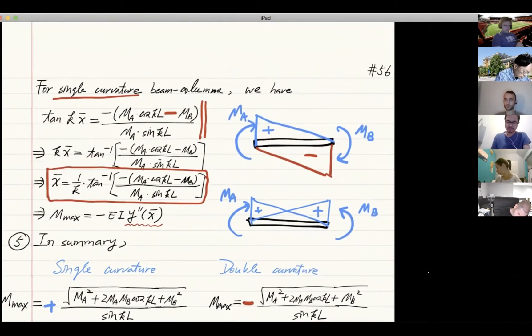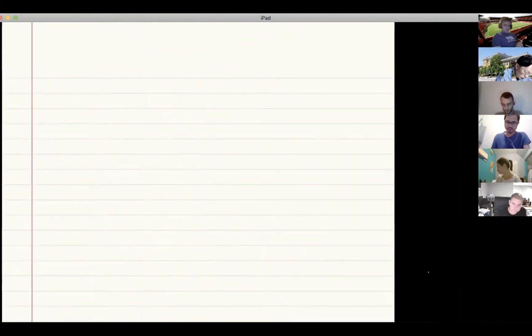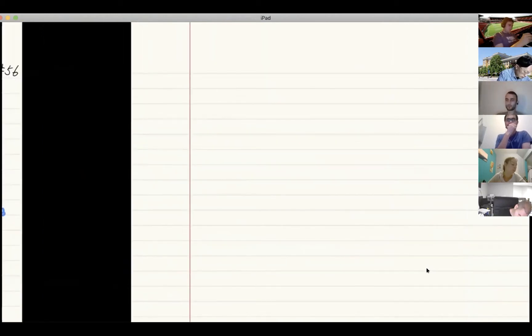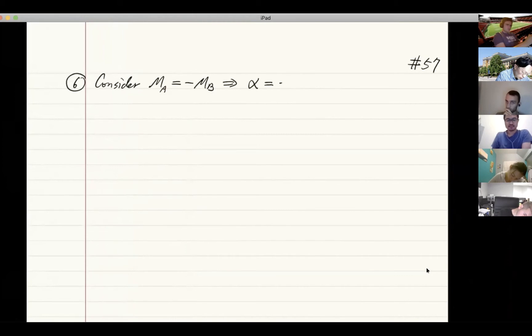Now we're going to connect this to something we use in design. This is step six, similar to what we did with the buckling of columns. If we consider MA equals negative MB, and that means our alpha is going to be minus one, which is less than zero.